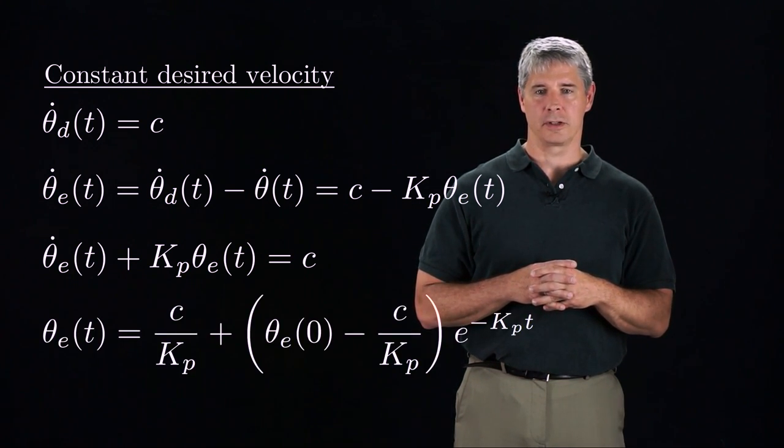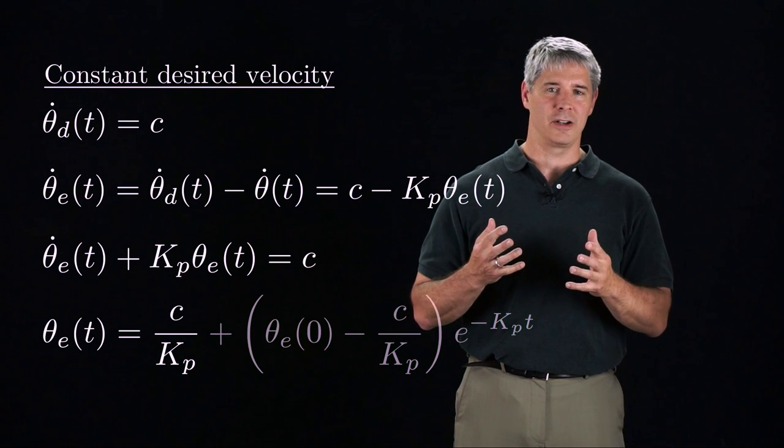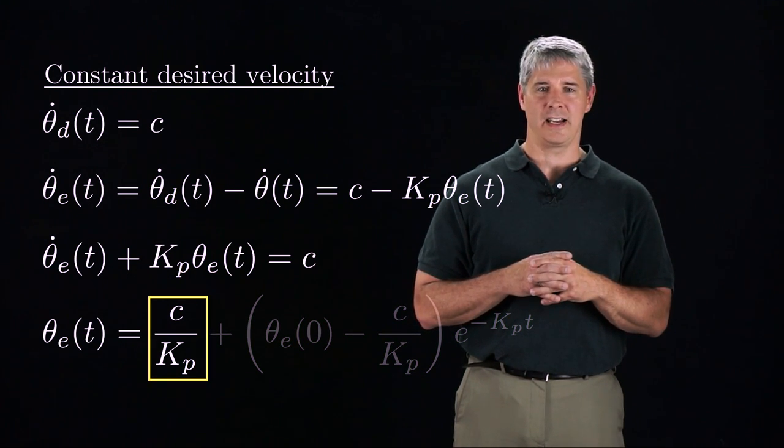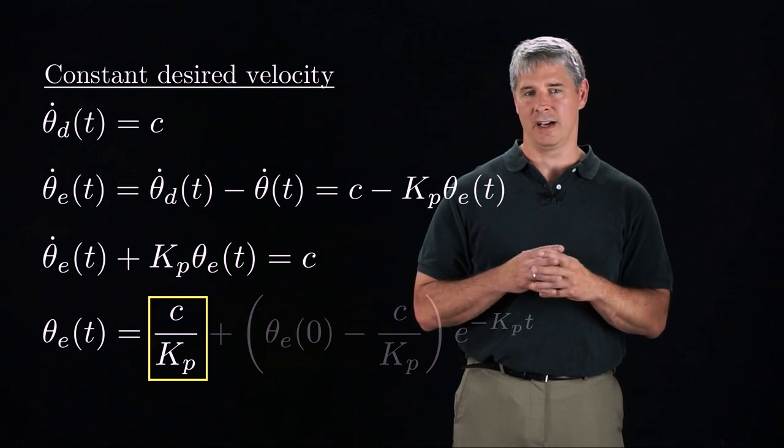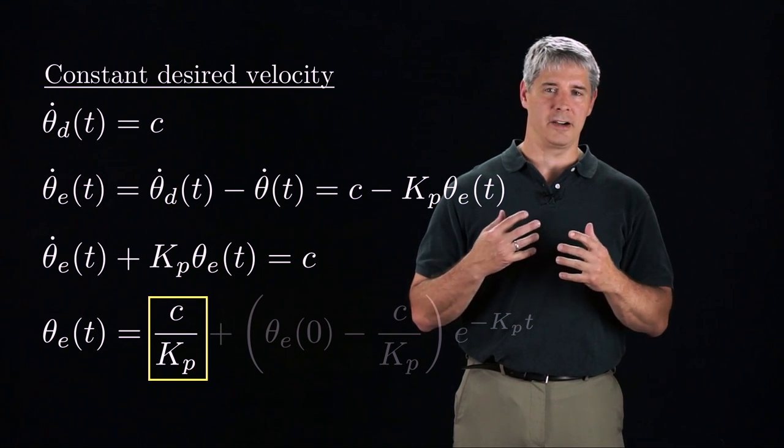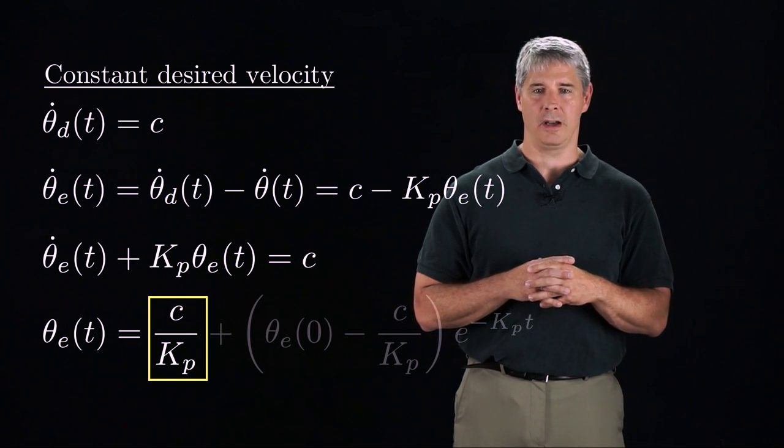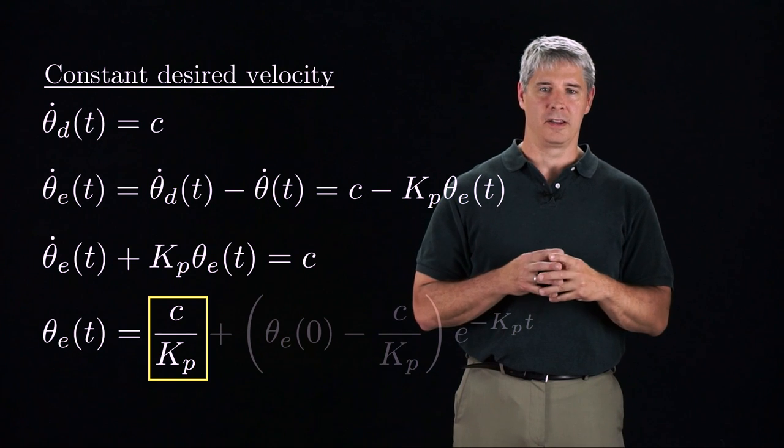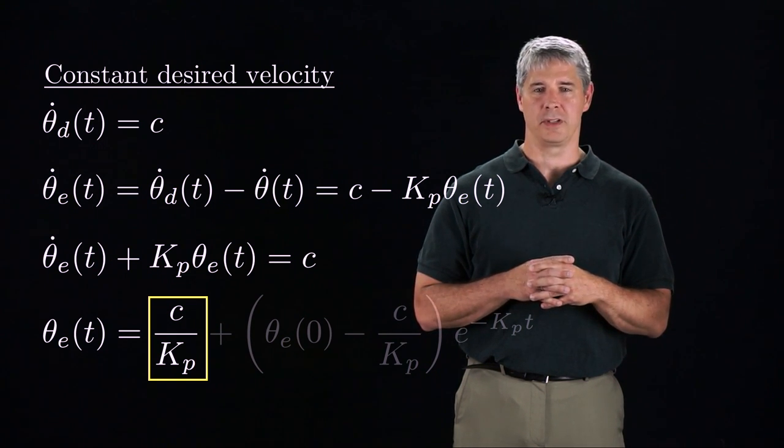The dynamics are stable for a positive kp, but the solution to the differential equation shows us that as t goes to infinity, the steady-state error is c over kp, not 0. Although this error can be made small by choosing kp large, as we just discussed, there are limits as to how large we can reasonably choose kp.